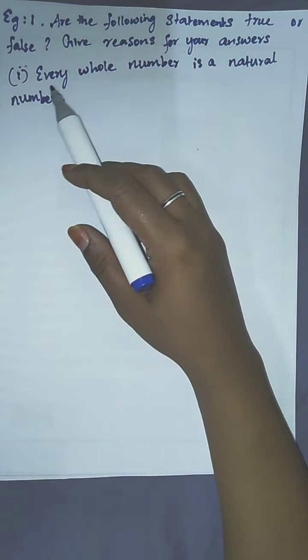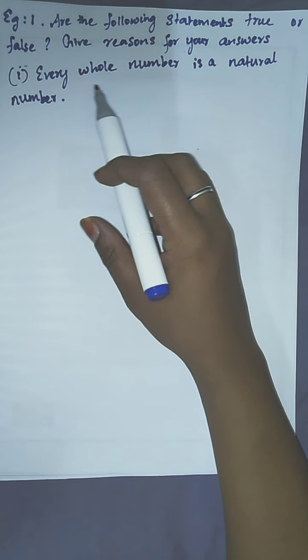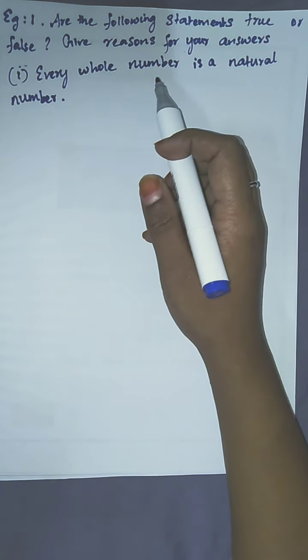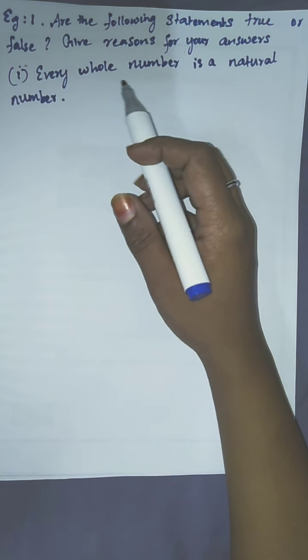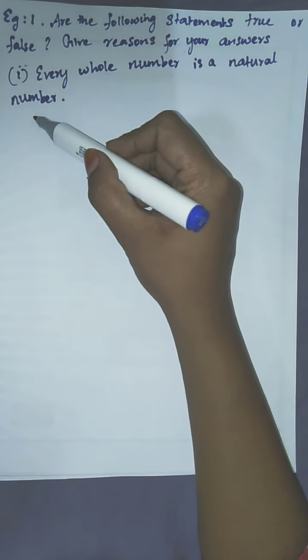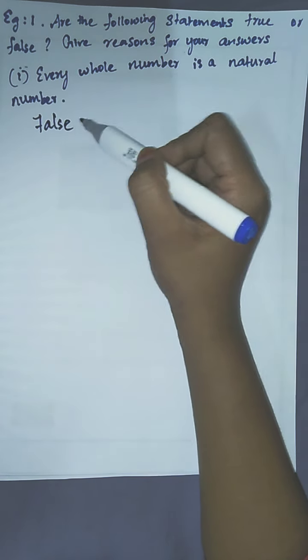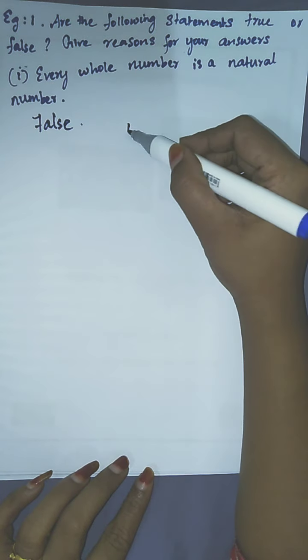The first statement they have given is: every whole number is a natural number. We have to mention whether it is true or false. Actually the answer is false. The reason is, see the whole numbers.